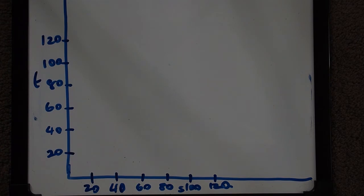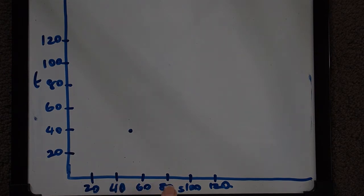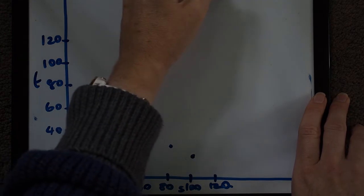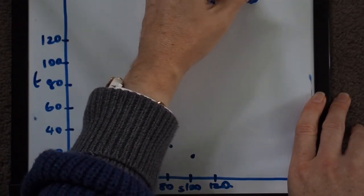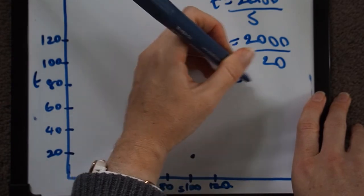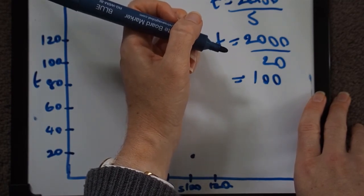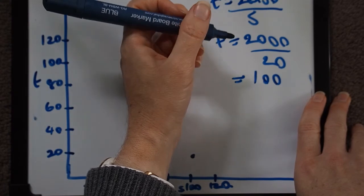The values that we had from our table of values: at a speed of 50 kilometers per hour it took us 40 minutes, at a speed of 80 it was 25, and at a speed of 100 it was 20. You can see it flattening out. I'm just also going to input 20 to give me a value over here. Remember t equals 2000 over s, if s is 20, 2000 over 20 gives me 100.